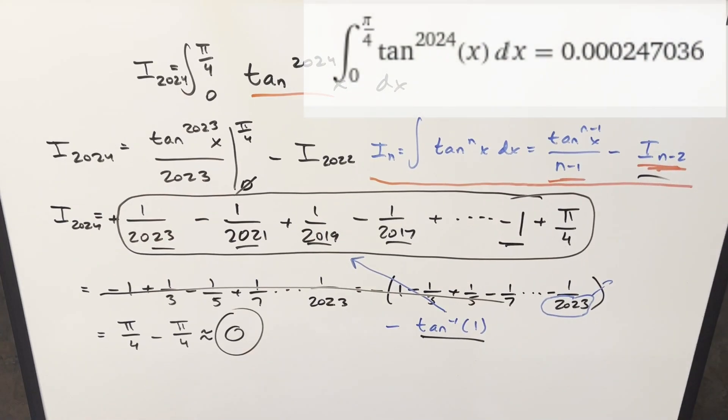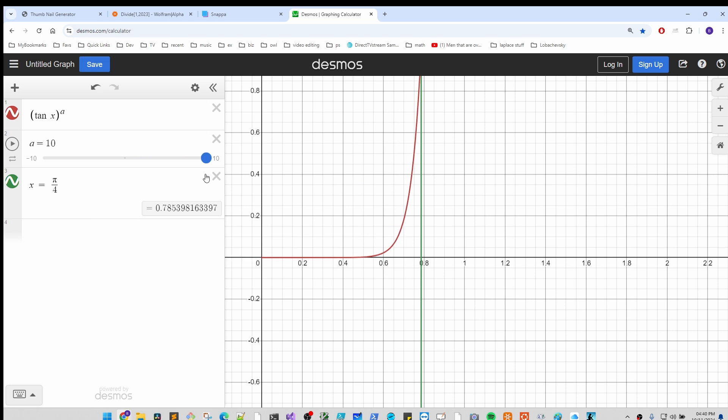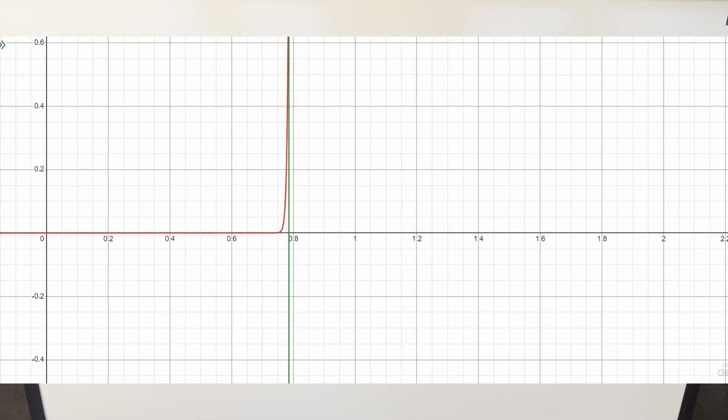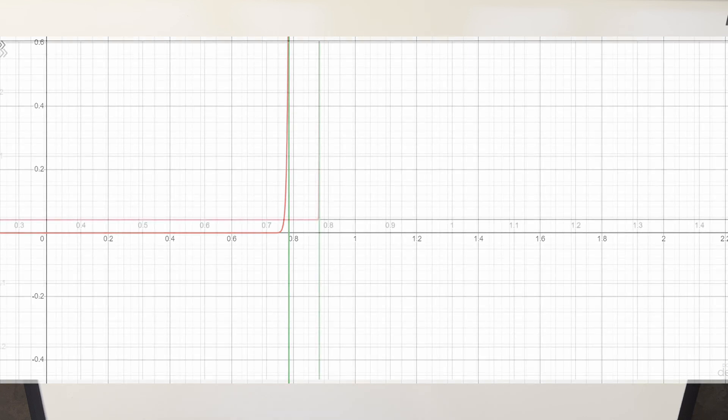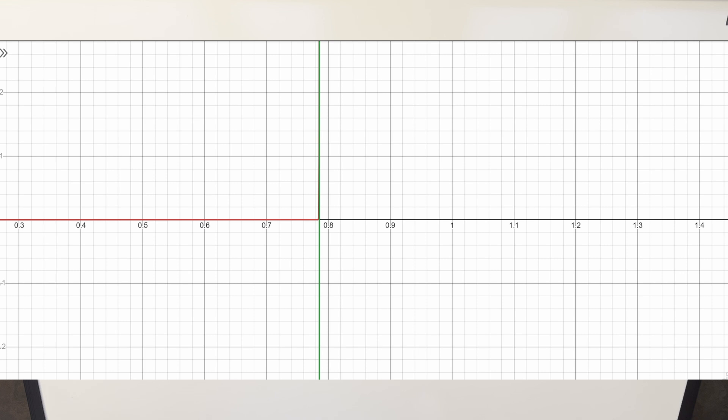And one thing I thought was really interesting with this is it's very easy to see it looking at a graph. What you could do is in Desmos, you create the slider, even though it only goes up to an exponent of 10. Going from 10 to 10 to the 10th, you see how we're losing area and we're getting closer and closer to zero. You start putting in larger exponents, get all the way up to 2024, you can barely even see that there's an area. It just starts very clearly, you can see the curve is going to be going towards zero.